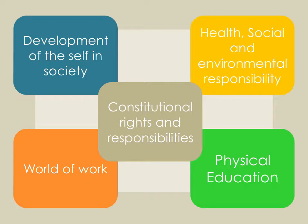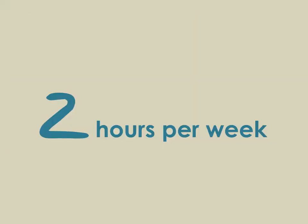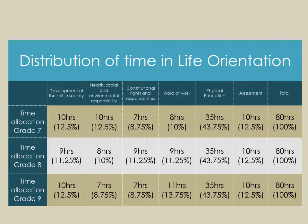The five sections are: development of self in society, constitutional rights and responsibilities, health, social and environmental responsibility, world of work, and of course the physical education component. All of this has to be done in two hours per week, so the key aspect of Life Orientation is actually the distribution of time, because time is tight.